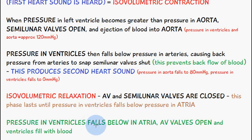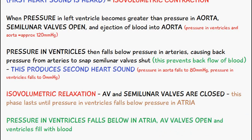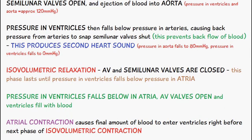Once the pressure in the ventricles falls below that in the atria, the atrioventricular valves will then open and the ventricles will begin to fill with blood. Then we have atrial contraction, which causes the final amount of blood to enter the ventricles.